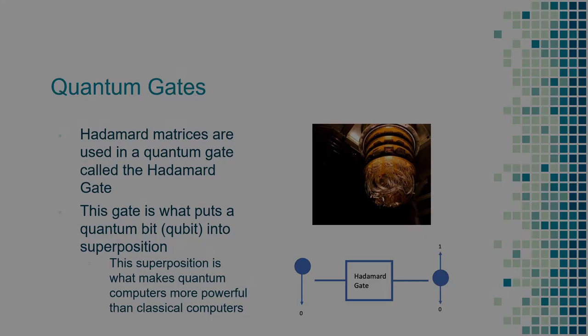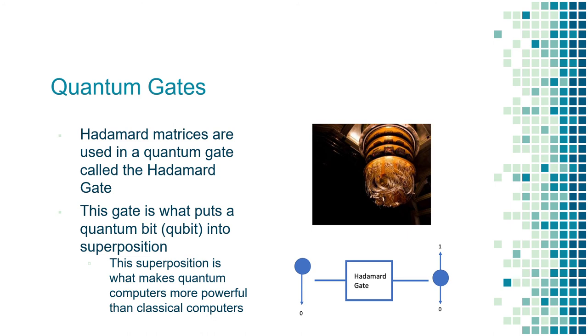The last application of Hadamard matrices that I want to touch on are quantum gates. First, what are quantum gates? As you may know, classical computers use a series of logic gates, such as AND, OR, or NOT, to carry out various functions. They work by taking in some sort of input in the form of bits, manipulating that input to form an output. Quantum gates do the same thing, except they are used in quantum computers instead of classical computers.